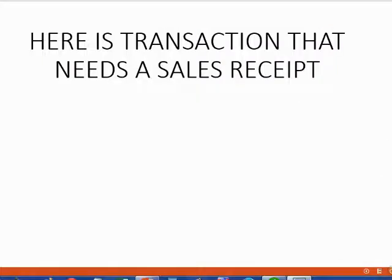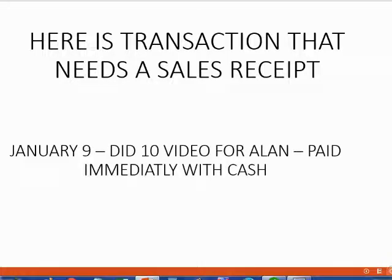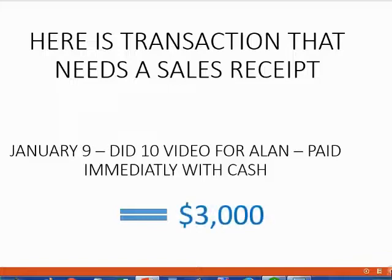Let's take a look at an example. Here is a transaction that needs a sales receipt. On January 9, we did 10 video hours for Alan, and Alan paid us immediately with cash. We all agree that the money amount of this sale is $3,000, so we earned $3,000 in video income and received $3,000 in cash.